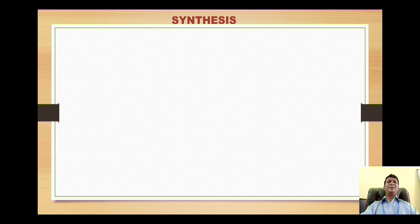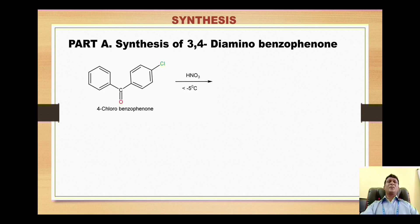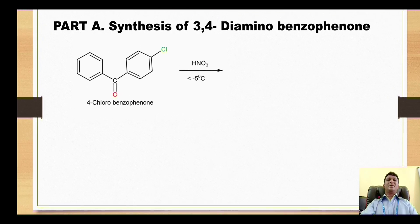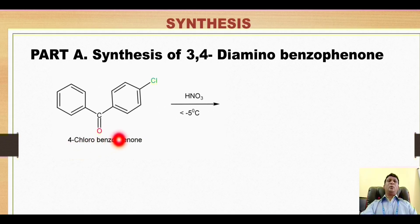Now next, move on to synthesis of this compound. The synthesis takes part in three phases. The first phase is synthesis of 3,4-diamino-benzophenone, which is very simple. Our starting material for the synthesis is 4-chlorobenzophenone. This is carbon number one, two, three, and four. Our starting material is 4-chlorobenzophenone which reacts with nitric acid at temperature less than minus five degrees centigrade. This is a very special condition where we carry out the nitration, that is the electrophilic substitution reaction. Ultimately the nitronium ion is generated from nitric acid.